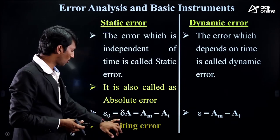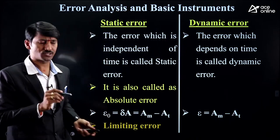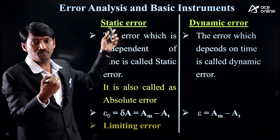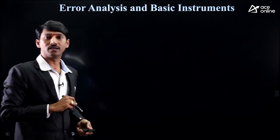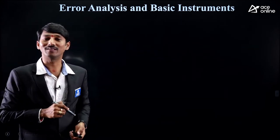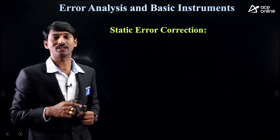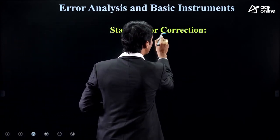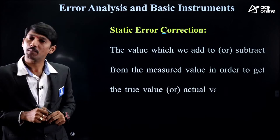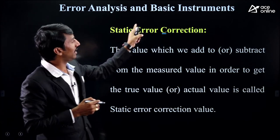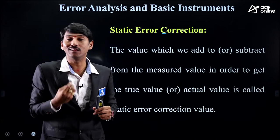Static error correction means we add or subtract a value to correct the error — to make the error zero. The value which we add to or subtract from the measured value to make it equal to the true value is called correction. For example, if true value is 4 and measured value is 3.9, we need to add 0.1. If true value is 4 and measured value is 4.1, we need to subtract 0.1 to correct it.